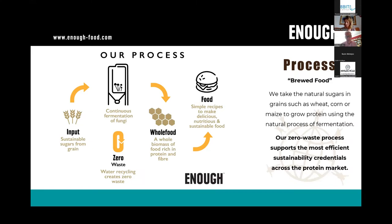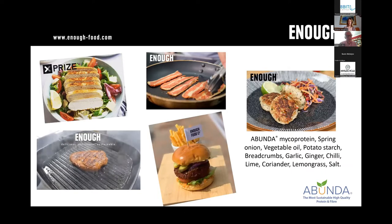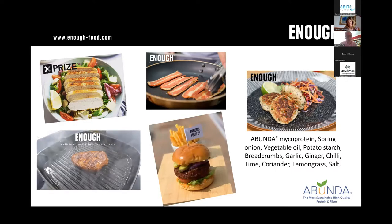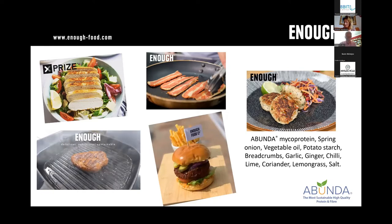A key part of our process is the fact that we have a patented zero-waste process — no waste from the process. In terms of our product, it is high in amino acids, high in protein, high in fiber, and very flexible in terms of how it can be used. Here are some examples of our material. The fusarium we use has a natural structure — you can see the fibrous nature according to the hyphae in the chicken example, and we control that quite precisely. Our primary focus is on food as a business-to-business company.